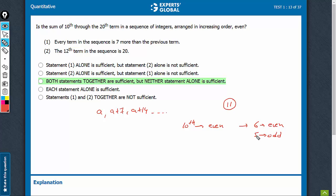So 6 into even would be even, 5 into odd would be odd. And therefore, sum of the terms would be odd. Sum of the terms is odd. And therefore, the answer will be no.